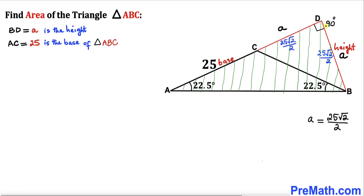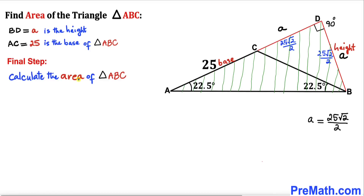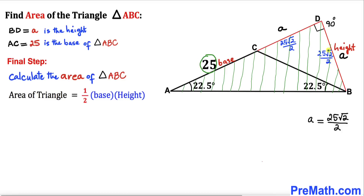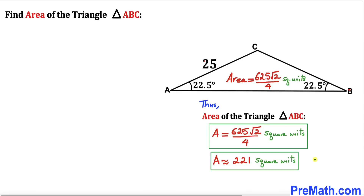Side length BD is our height and side length AC is our base. Using the area formula — Area = ½ × base × height — our base is 25 and our height is 25√2/2. So the area equals ½ × 25 × (25√2/2), which is approximately 221 square units.